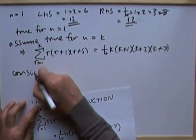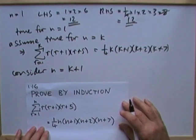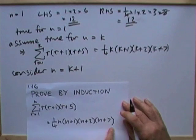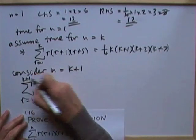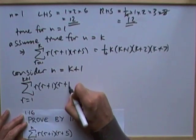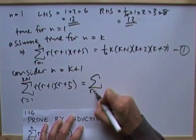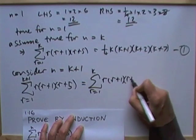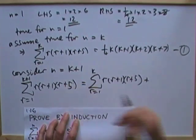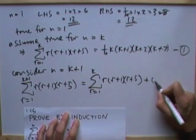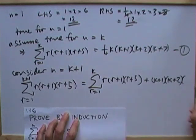Next, consider n equals k plus 1, and it would be required to demonstrate that sigma r equals 1 to k+1 of r(r+1)(r+5) equals sigma r equals 1 to k of r(r+1)(r+5) — the first k terms we already have — plus the next term, where r is k+1: giving (k+1)(k+2)(k+6).